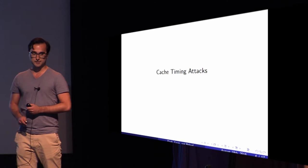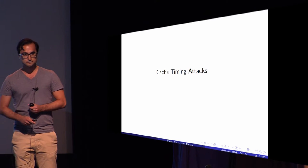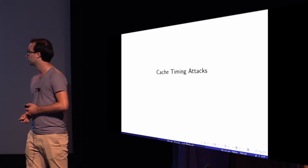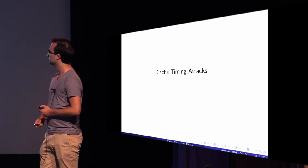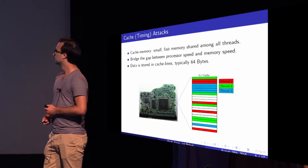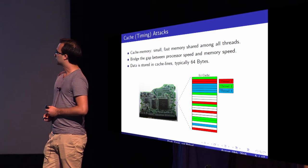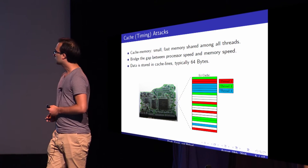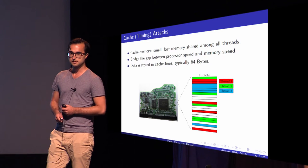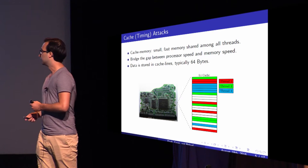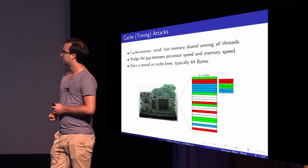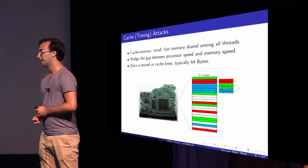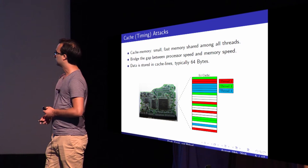I will briefly introduce cache timing attacks. Juval is going to give a talk after this and knows a lot more about it, so I will just keep it to the basics. Cache memory is a small, fast bank of memory shared among all threads. It basically tries to bridge the gap between processor speed, which is quite fast, and memory speed, which is quite slow.